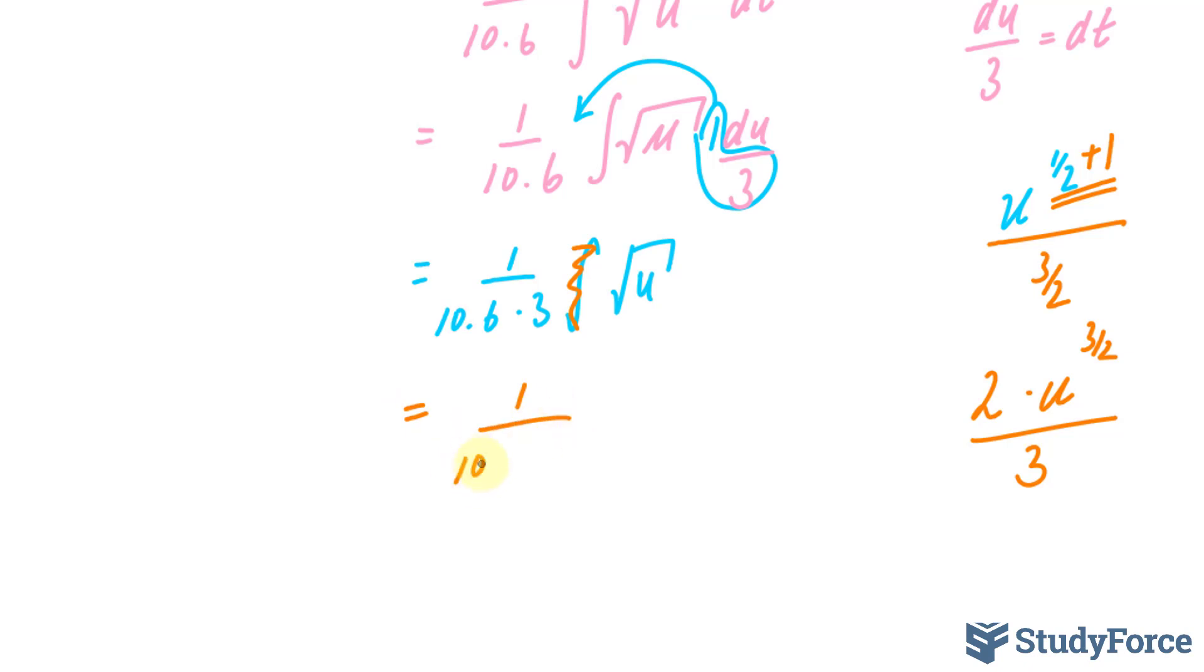So, 1 over 10.6 times 3 times 2, u to the power of 3 over 2 over 3. And I'll replace u with what I set it as originally, which was 3t plus 25.4. And of course, don't forget the constant. I'll call the constant k and make this equal to i.